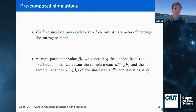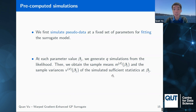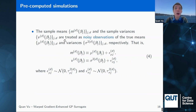We want to evaluate the synthetic likelihood for any parameter value without simulating each time. So we build surrogate models for the mean and the variances. We first simulate data at a fixed set of parameter values. For each parameter value, we generate Q simulations from the likelihood and obtain sample means M and sample variances V from the simulated sufficient statistics.